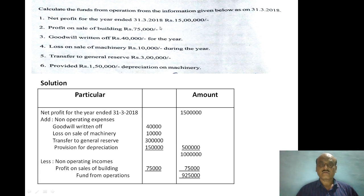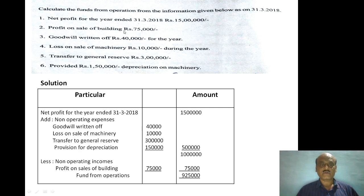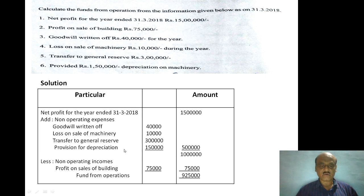For this problem, only the current year figures are given — no previous year comparison needed. Net profit for the year ended 31st March 2018 is 15 lakh. We add non-operating, non-cash expenses: goodwill written off 40,000; loss on sale of machinery 10,000 — this is a non-operating loss; transfer to general reserve 3,00,000; provision for depreciation 1,50,000 — these are non-cash items.